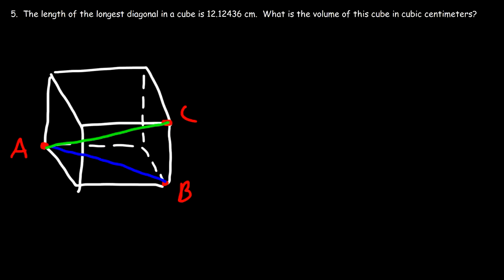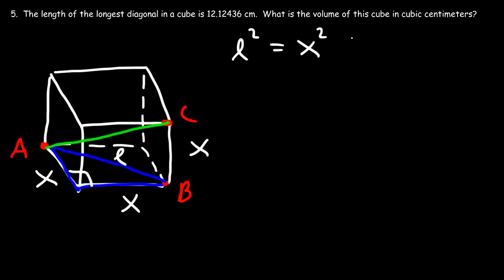For a cube, all sides are equal, so we call each side x. Focusing on the blue triangle, we get: l squared equals x squared plus x squared, where l is the hypotenuse of the face diagonal triangle. Then focusing on the green triangle and applying the Pythagorean theorem again, d squared equals l squared plus x squared, where d is the longest diagonal.